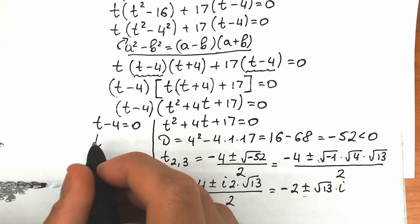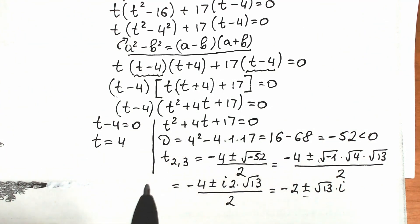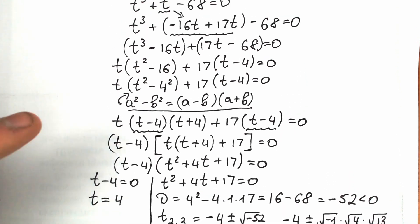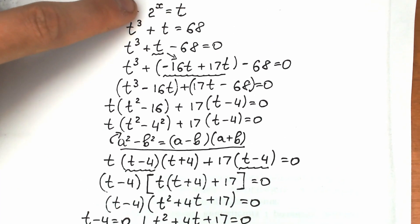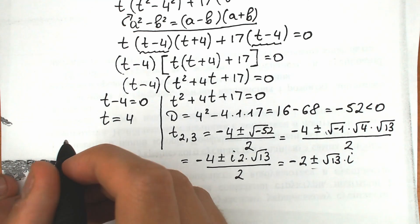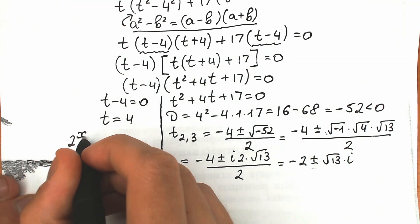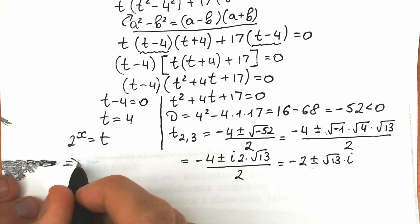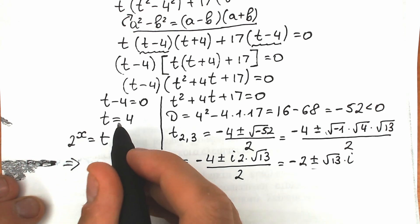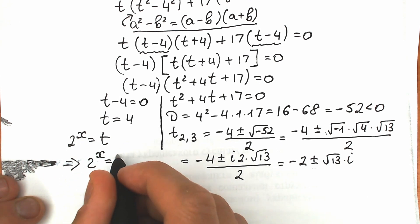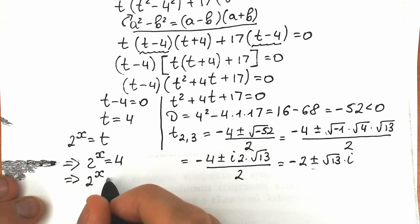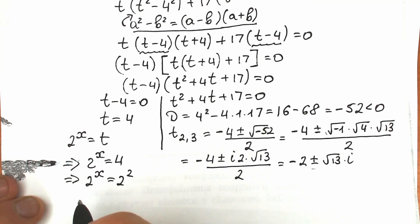From the first factor, t minus 4 equals 0, so t equals 4. Recalling our substitution 2 to the x equals t, we have 2 to the x equals 4. Since 4 equals 2 squared, we get 2 to the x equals 2 squared, and therefore x equals 2. This is our first, real-number root.